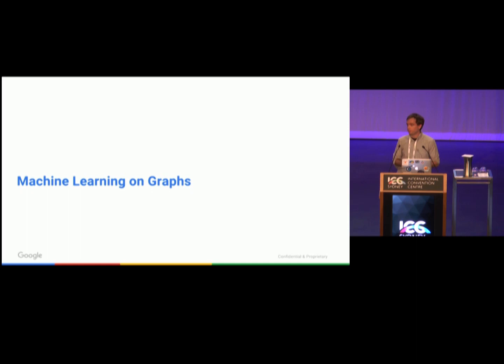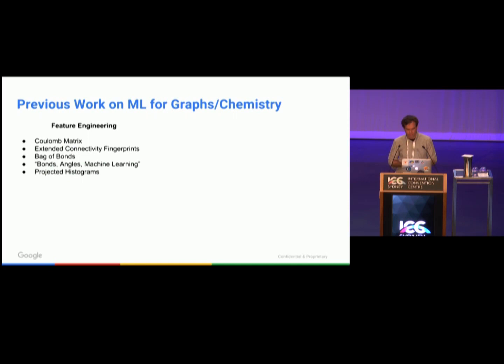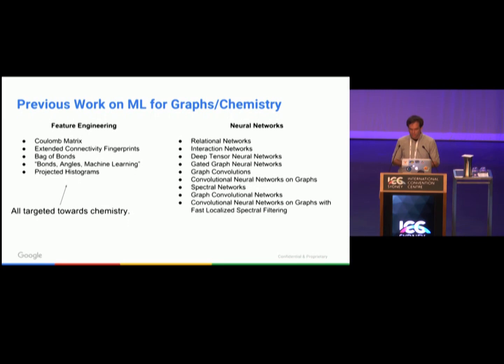Since we're viewing molecules as graphs, when we started this project, we naturally looked at previous work on machine learning on graphs. There's sort of two main categories of previous approaches. One involves feature engineering, primarily targeted towards chemistry. This is not an exhaustive list, but there's many different hand-engineered featurizations of molecules that people use to feed into standard machine learning classifiers. On the right, there's a number of neural network-based approaches. Some are applied to chemistry, some are applied to more general problems where the input is a graph. What unites these nine different papers is that these are all neural networks that are invariant to graph isomorphism. That means you can feed in two isomorphic graphs and the networks give the same output. Another way to say that is you can reorder your vertices and your network is invariant to that order.